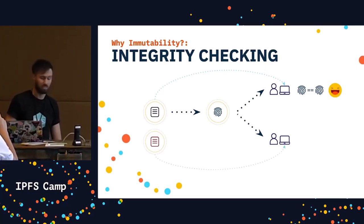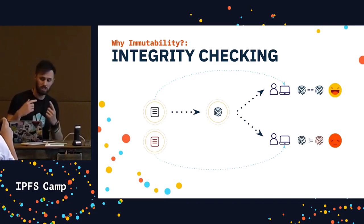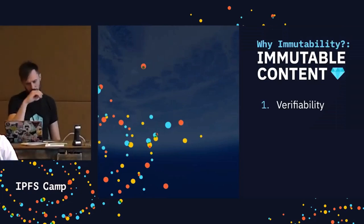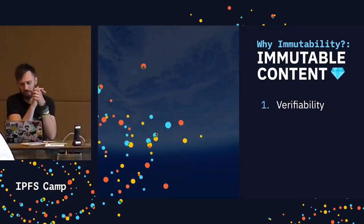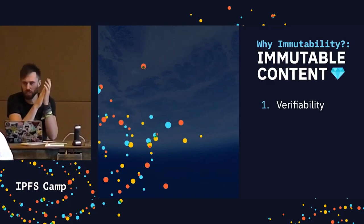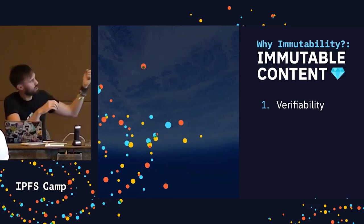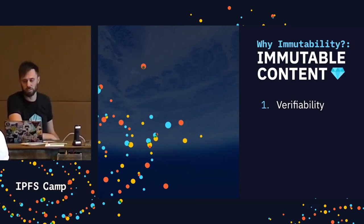If someone else gets hold of the data and the hashes don't match, then someone's tampered with your data. The guarantee of integrity checking is that content is immutable — if the data changes, the hash I generate no longer matches. So verifiability is one of the main reasons for using immutable data.